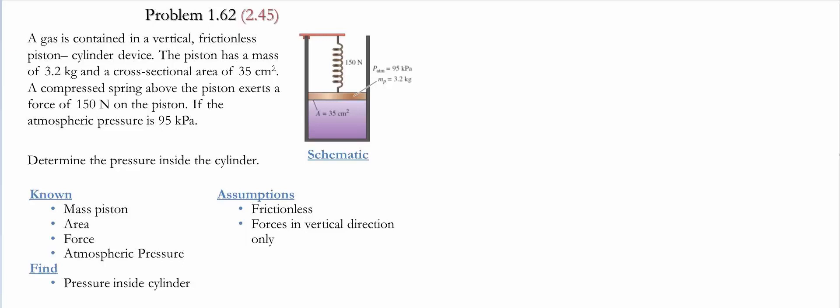We need to determine the pressure inside of the cylinder. The list of the known values and what we're looking for is listed, and the assumptions that we're going to use in this problem. We're going to assume that there is no friction, therefore it's a frictionless system. And we also are going to assume that all the forces are acting in the vertical direction only.